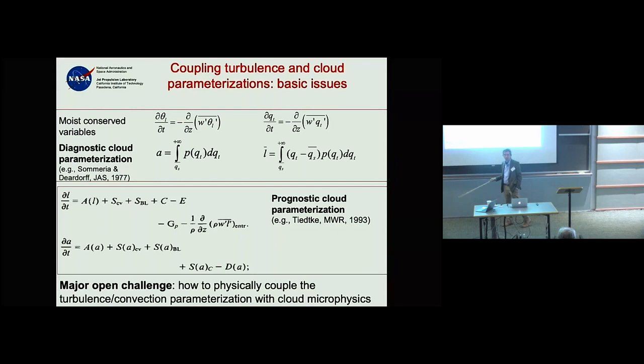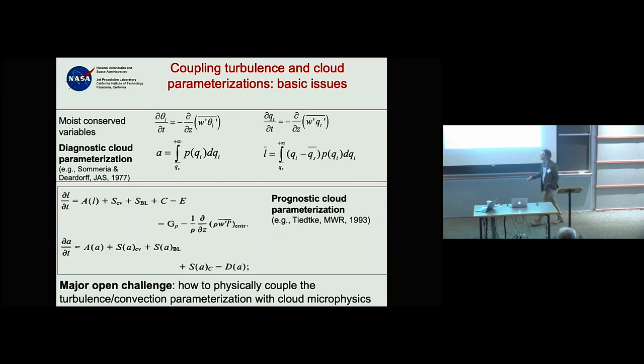There are several climate and weather models with prognostic equations for cloud fraction, which is odd because this quantity is not continuous: as you go to infinitesimal dt's and dx's, it disappears. This is a major open challenge right now.